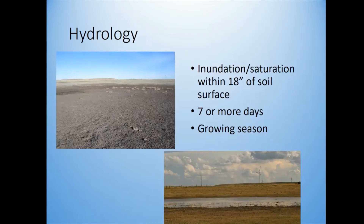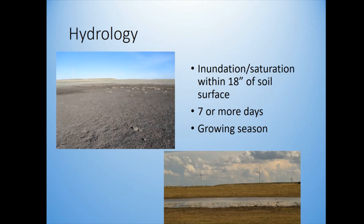Hydrology has a very specific definition — we look for inundation or saturation, which doesn't necessarily mean visible water. You can have saturation of soil within 18 inches of the soil surface for at least seven or more growing days — meaning seven days during the growing season. Pooling water in winter outside the growing season, like in Texas, wouldn't necessarily count.